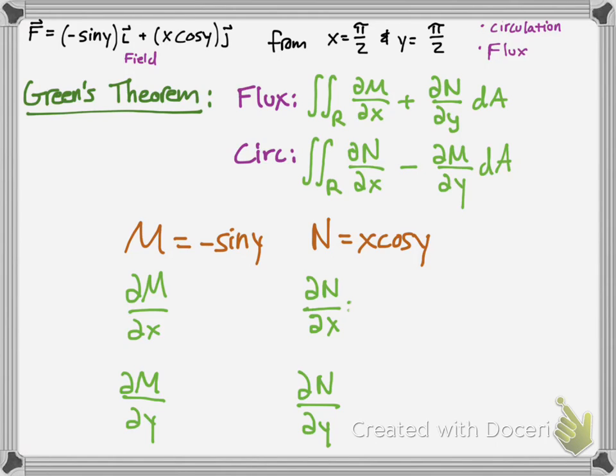Partial M with respect to x, that's going to be 0, because you're treating y as a constant, so the derivative of the constant is 0. Next, we have the partial derivative of M with respect to y. The derivative of sine, a negative sine would be negative cosine. Then, you take the partial derivative of N with respect to x, and that will be cosine y, because cosine y is treated as a constant. Like, if that were 3x, then the 3 would come out. Then, finally, we have partial N with partial y, and that would simply be negative x sine y, since the derivative of cosine is negative sine, and the constant stays attached.